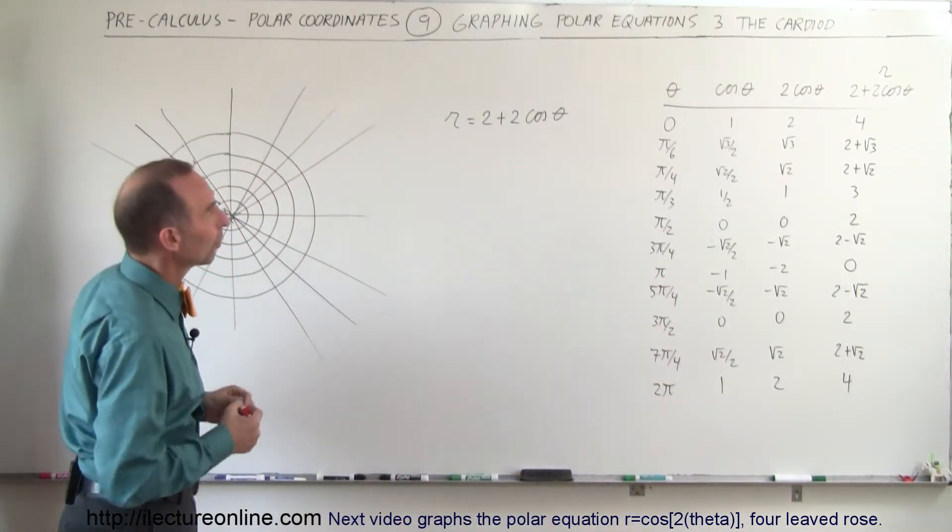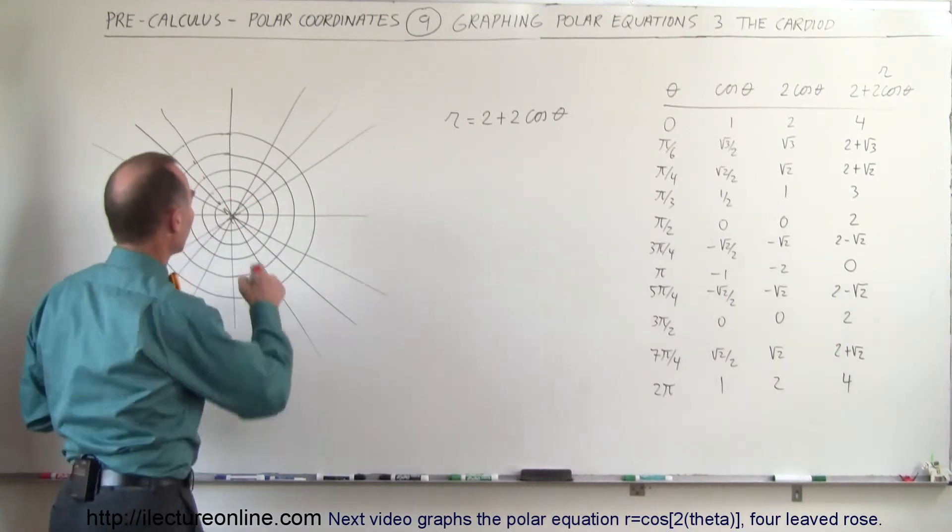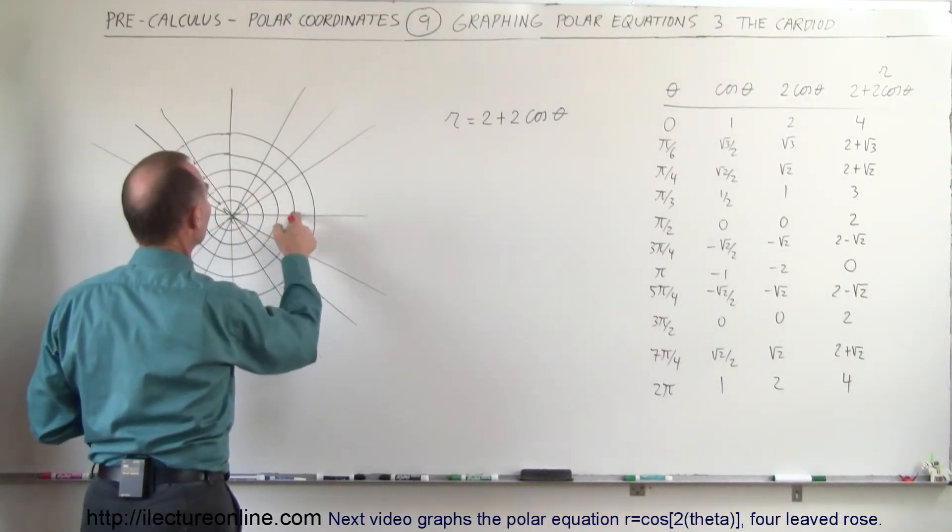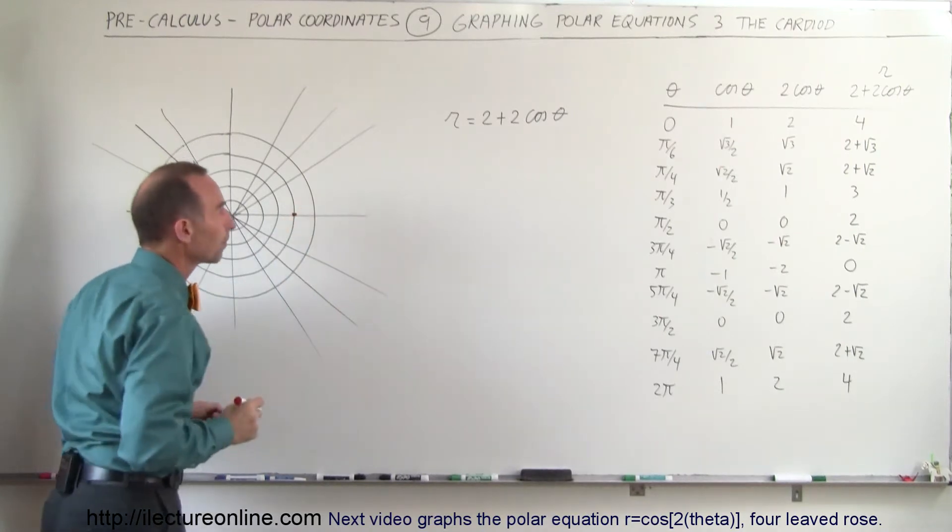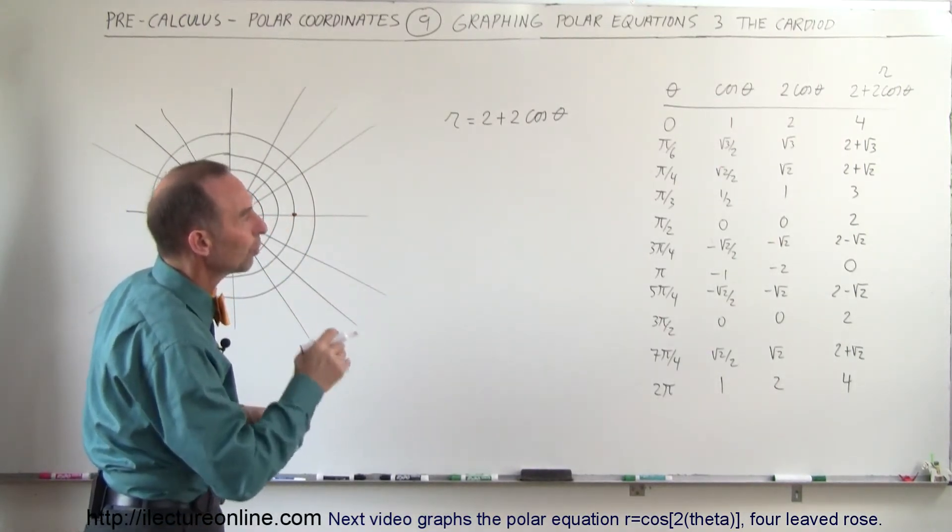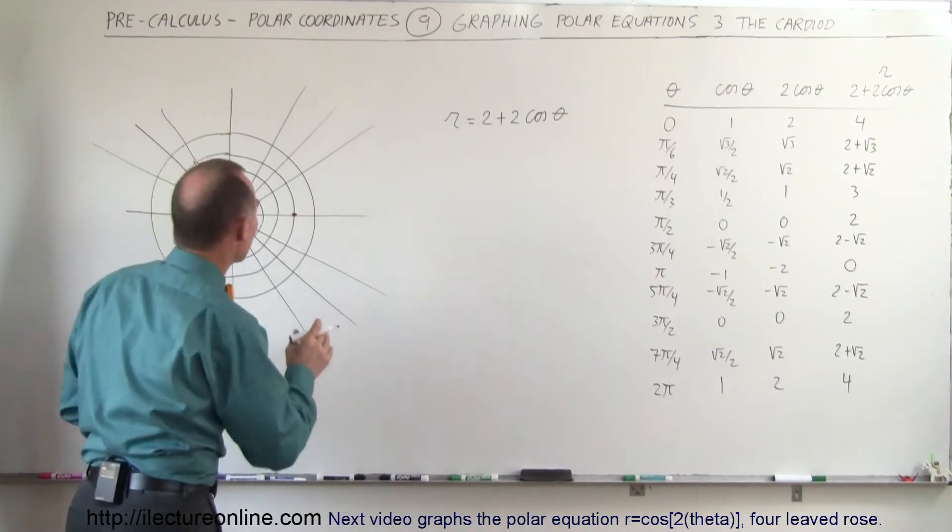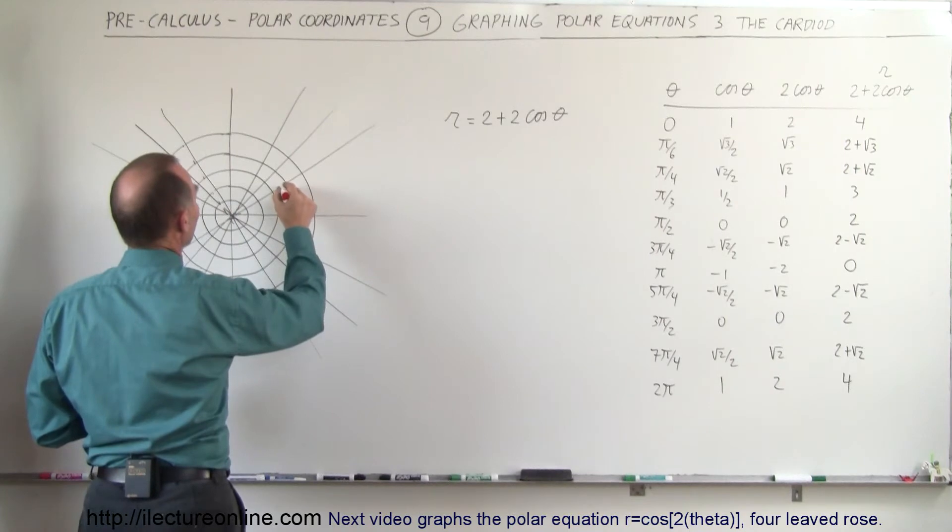Alright, let's start with the first one. If the angle is 0, then we know that r is 4. So at this point, we have 1, 2, 3, 4, we put a dot right there. When the angle is 30 degrees, or π divided by 6, is 2 plus the square root of 3. The square root of 3 is about 1.7, that would be about 3.7. So that puts us about there.